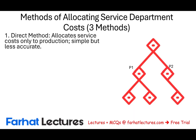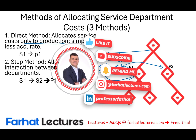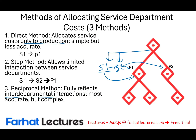There are three methods to handle this. The first is the direct method — you allocate service costs directly to production. It's simple but less accurate. The second is the step method, which allows limited interaction between service departments: Service 1 is allocated to Service 2, then whatever is in Service 2 gets allocated to Production 1 and Production 2. The third is the reciprocal method, which reflects interdepartmental interactions. It is the most accurate but also the most complex.